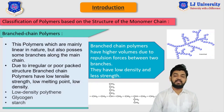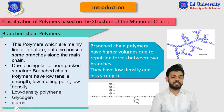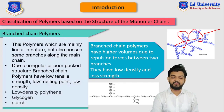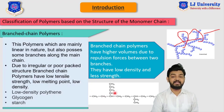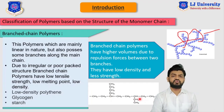Here in this image, you can see the branched chain polymer. Let me take a pointer so I can explain this more clearly. Here you can see that this is the linear chain and these are the branches attached to it — so this is the branched polymer. In the polyethylene example, you can see the straight line chain of the linear polymer and the branches attached to it. That was all about the branched chain polymer.